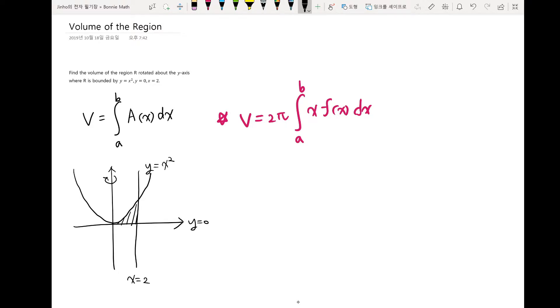So the region bounded by these three graphs is here. And we are rotating about the y-axis. So rotating y-axis. So if you can imagine, we will have some sort of volume. So first of all, if we are using shell method, simply plug in all the values here.